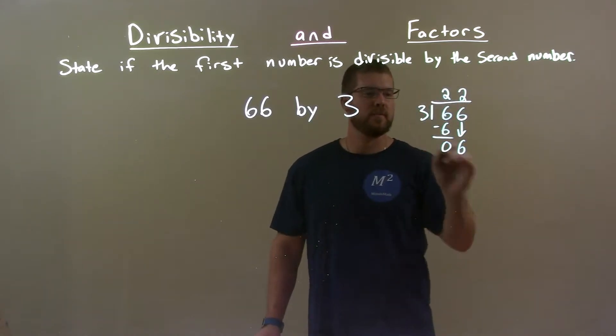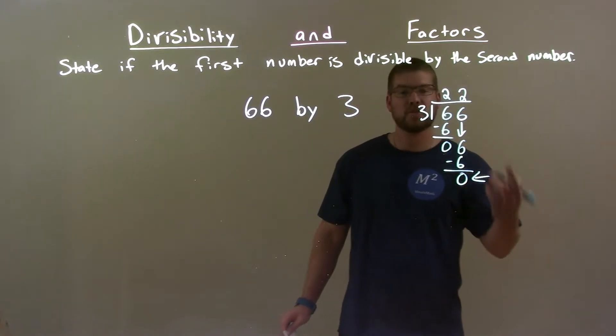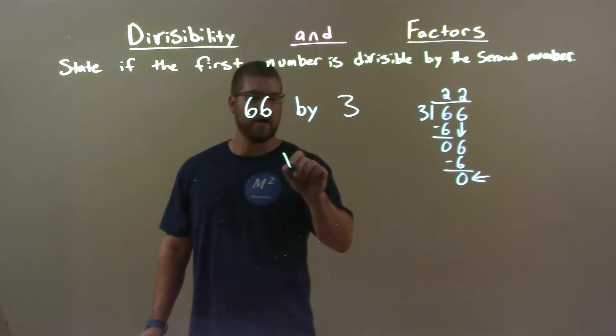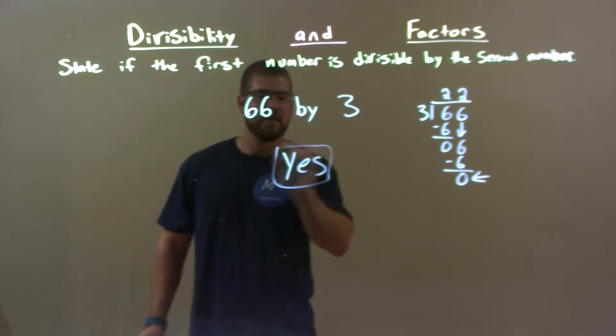Yes, 2 times. 2 times 3 is 6. Subtract the 2. 6 minus 6 is 0. So now we have a remainder of 0 which shows that 3 goes into 66 evenly 22 times. So, our answer here is just yes.